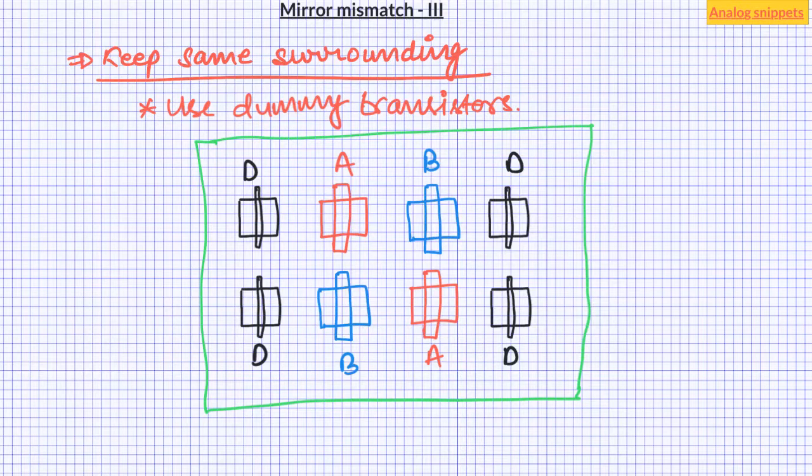Coming back to well proximity effect or WPE. It concerns with the distance between edge of the main transistor and edge of the well. Threshold voltage of a transistor is known to have some dependence on this distance. Especially if this distance is small a few micrometers. For bigger distance like tens of micrometers this effect becomes very small. Check out your foundry design rule manual to find the recommended distance. In the layout keep distance same as or larger than that rule. And keep the same distance on the both sides.